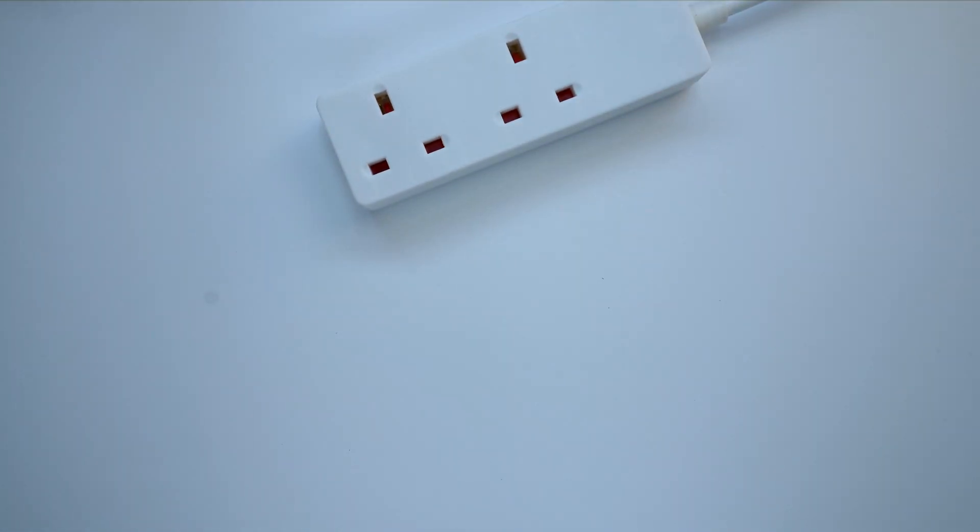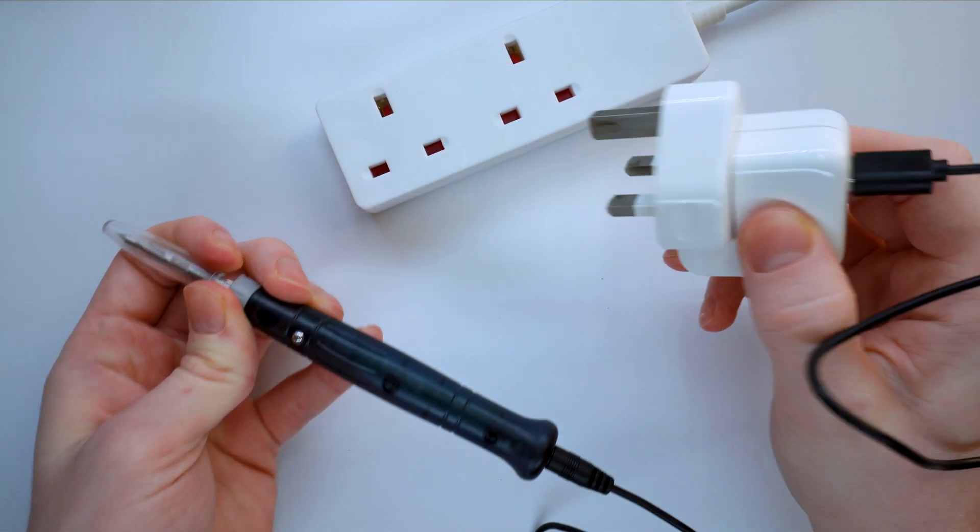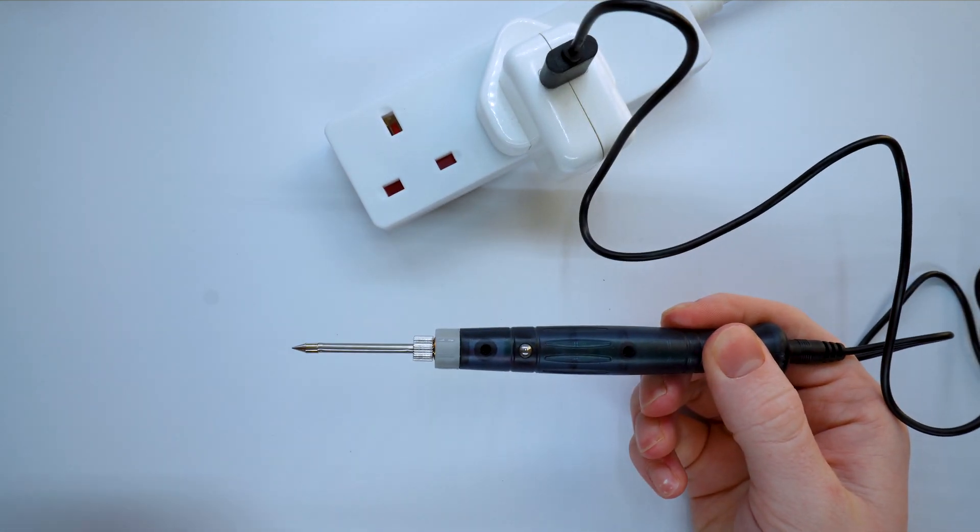The next thing we need to do is plug in the soldering iron. So the first thing you want to do is put the barrel connector into the end of the soldering iron and then plug your soldering iron into a power bank or the main socket like so.